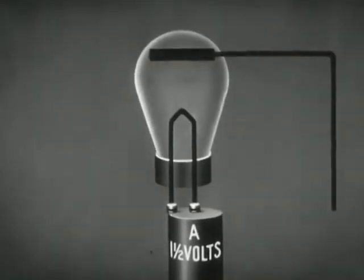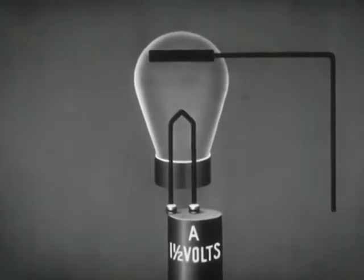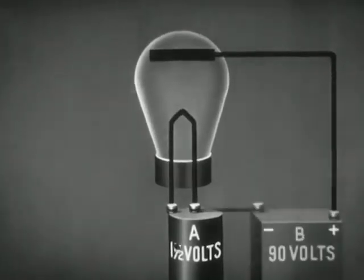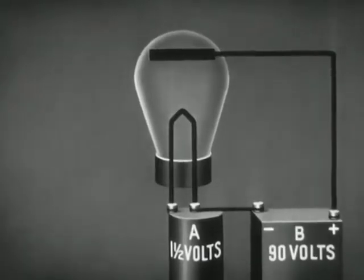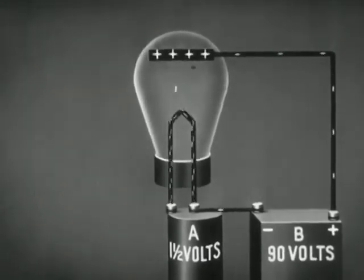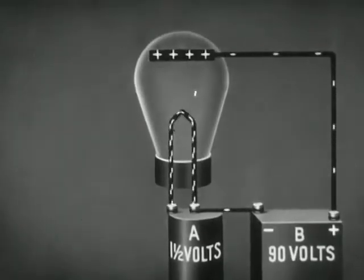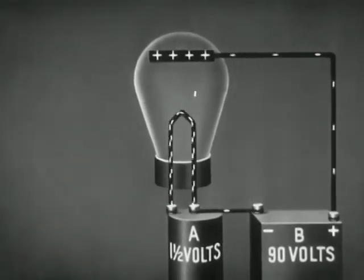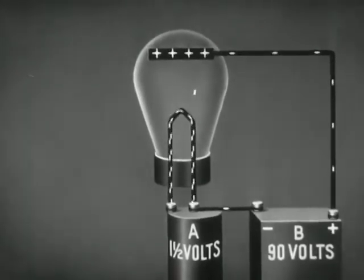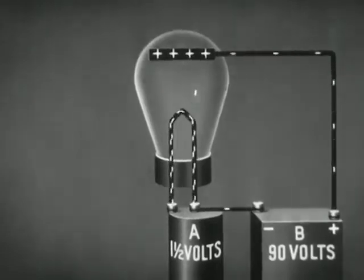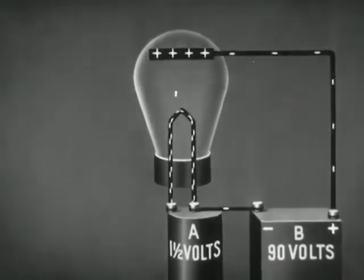Now let us add a second element called the plate. Actually, the plate is a metallic cylinder surrounding the filament. The plate is connected to the positive side of a high voltage battery. Since the plate has a positive charge with respect to the filament, electrons are attracted to the plate. A stream of electrons thus flows from the filament to the plate inside the tube, to the battery, and back to the filament. This is the plate circuit.